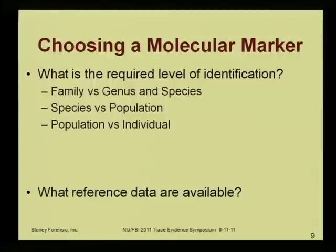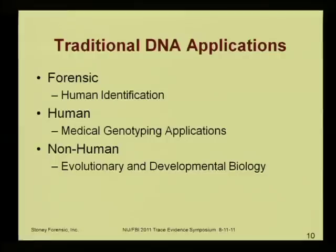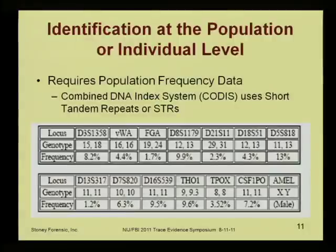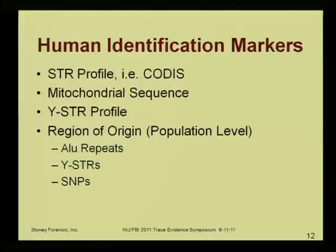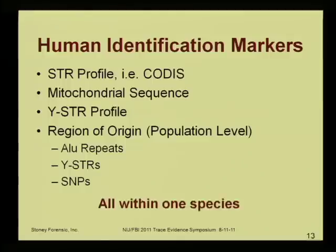Along with choosing a molecular marker, you need to look at what reference data are available in order to interpret your result. The traditional DNA applications in forensics have been human identification, and there are also human medical applications. In the non-human area, studies have primarily been driven by evolutionary and developmental biology. So when I look at the reference data for the work we're talking about, it's primarily from those studies, not from forensic science. For human DNA, CODIS provides the population data that allows you to interpret results — all of the data is from one species — and we're looking at the other end of the spectrum.